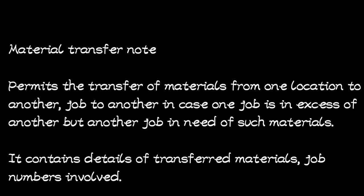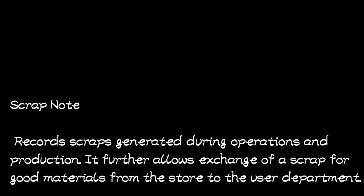The material transfer note contains the details of the transferred materials and the job numbers that are involved. Another document is a scrap note. This one records the scrap or damaged materials generated during operations and production. It also allows the exchange of scrap for good materials from the store to the user department — in case something was being used and it got spoiled and became scrap.